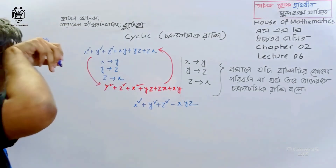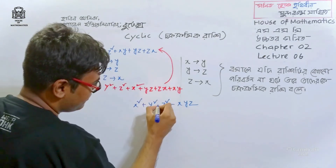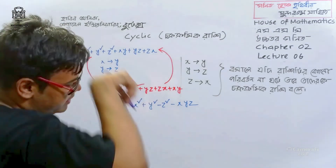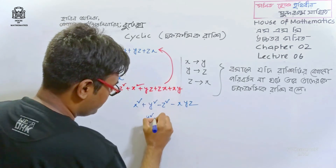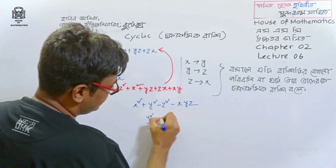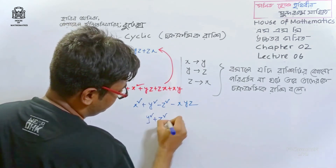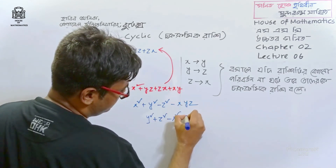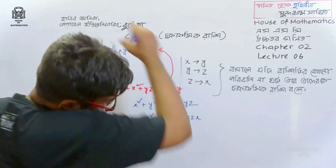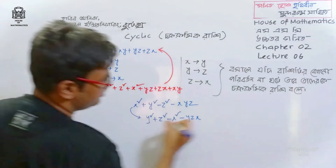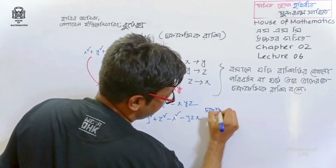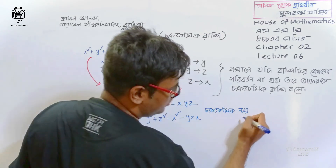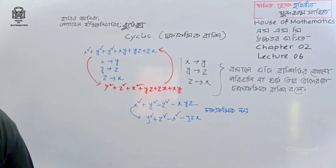So x → y → z goes like this; x = y is going to go like this; y = z is going to go like this; z → y → x will go like this. So x is mapped to y, y to z, z back to x. Just check if you have this — Chakrokrumik — we will change the cyclic order.